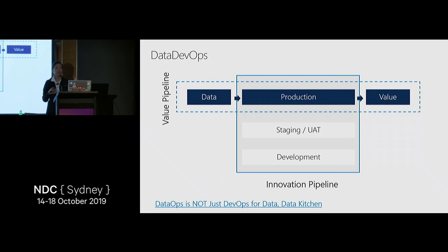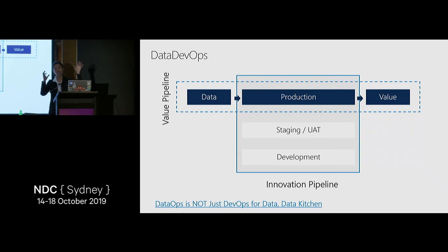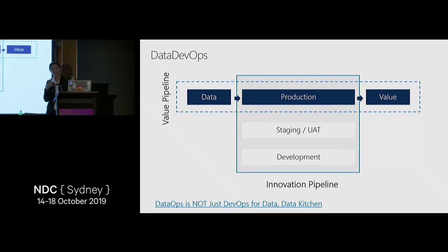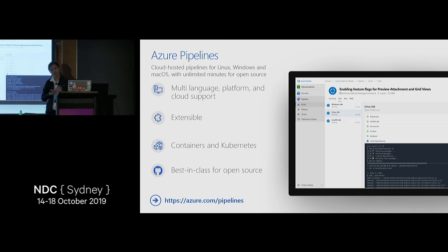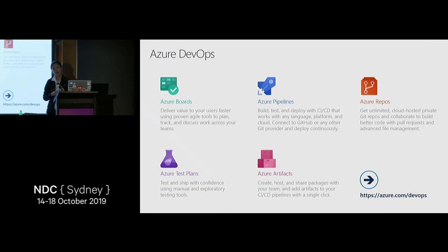There's a duality here: you have two orchestrators — one for your value pipeline and one for your innovation pipeline — along with testing for both. For the value pipeline, data is changing but the pipeline is not. For the innovation pipeline, data is fixed while the pipeline is changing. I'm using Azure Pipelines as my CI/CD mechanism, which is part of the Azure DevOps suite — including Azure Boards, Azure Repos, Test Plans, and Artifacts — but we'll focus specifically on Azure Pipelines.